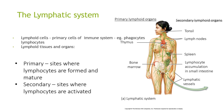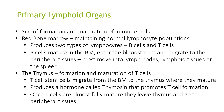Lymphoid cells are the primary cells of the immune system, such as phagocytes and lymphocytes. The lymphoid tissues and organs are primary sites where lymphocytes are formed and matured, and secondary sites where lymphocytes are activated.